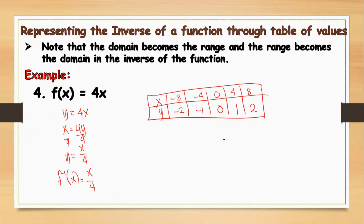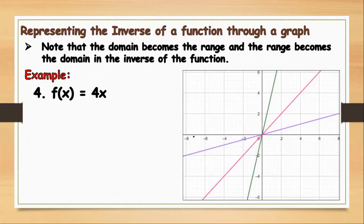These are the values we write when plotting on the graph. Note that both pass through 0,0 on the graph. This one is for the original function f(x) = 4x, and this violet one is for the inverse function f⁻¹(x) = x over 4.